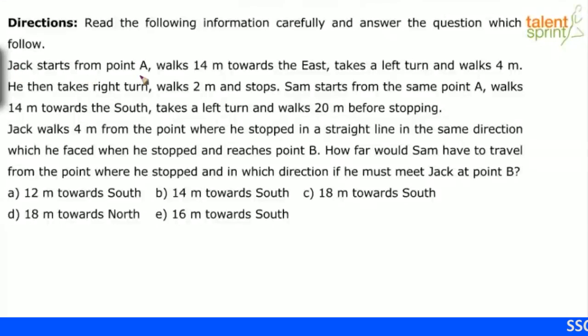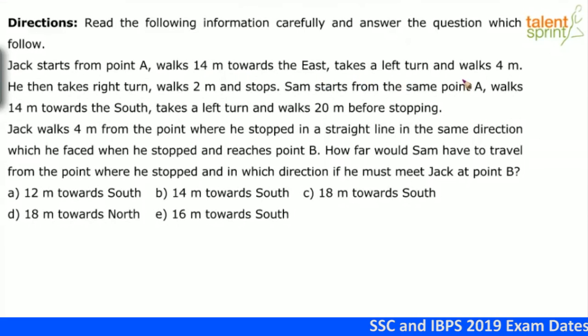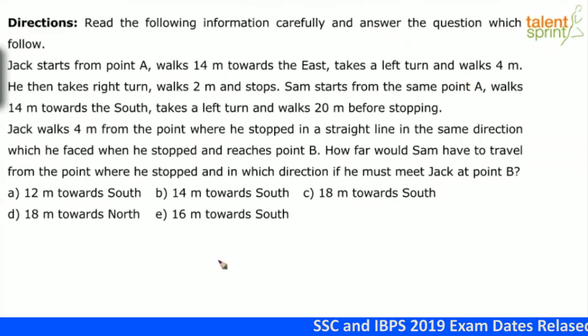Jack starts from point A, walks 14 meters towards east, takes a left turn and walks 4 meters. So let us trace Jack's path. It says Jack starts from point A.